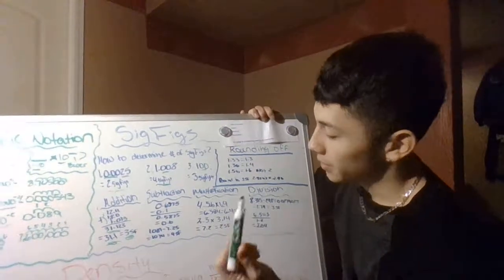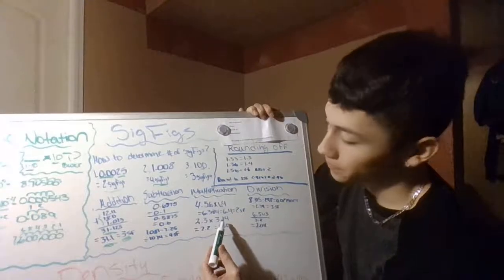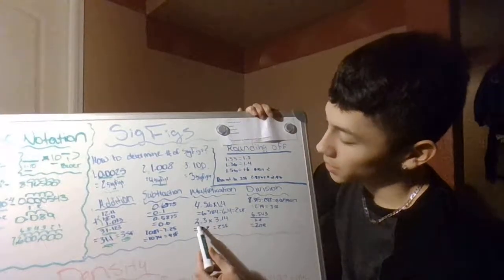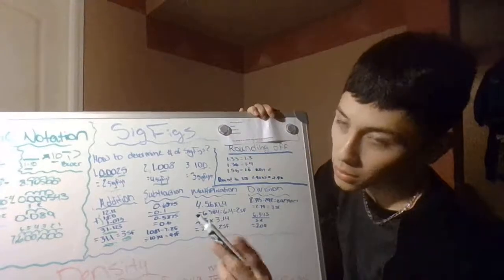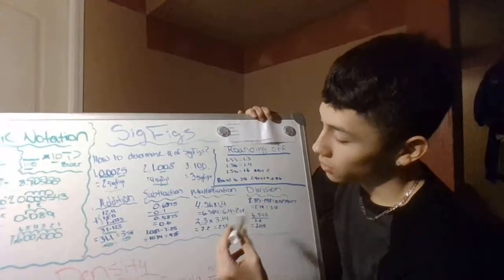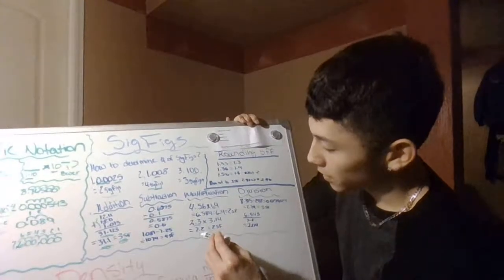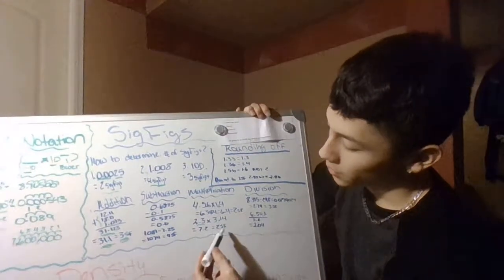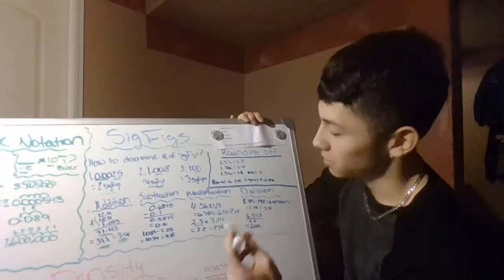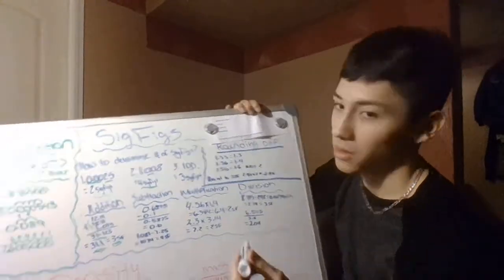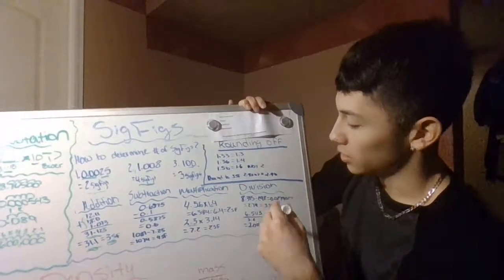Another multiplication example: 2.3 times 3.14. Your limitation is two sig figs because 2.3 is only two sig figs. So your answer would be 7.2, which is two sig figs. Pretty simple process.